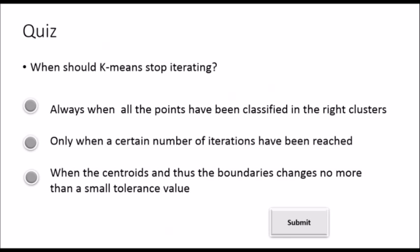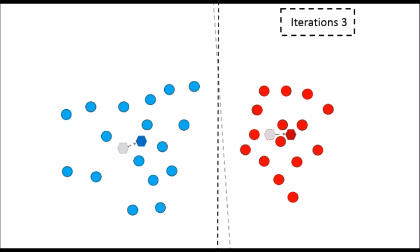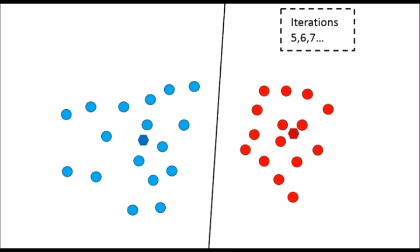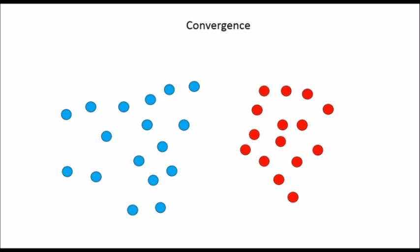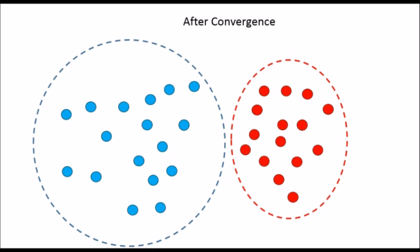So when do the iterations of k-means stop? Click the option that you think should apply. With every movement of the centroids, the position of the boundary line changes. And this keeps on happening till there are no more changes in the positions of both the centroids and the boundary line. This iteration stops when the boundary's position changes no more than a small tolerance value for the upcoming iterations. When this happens, the algorithm is said to have converged. And this is how the final clustering looks like.